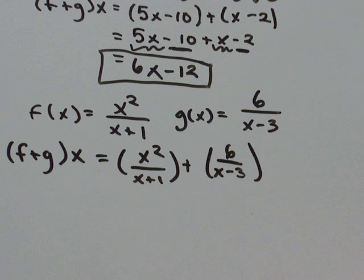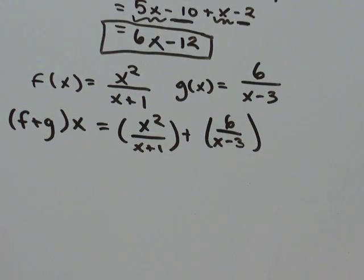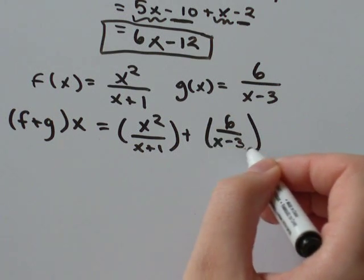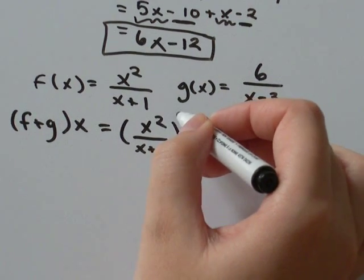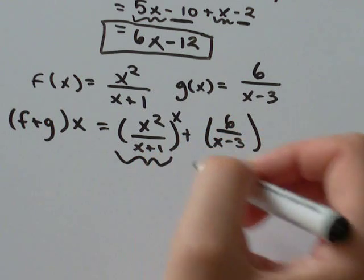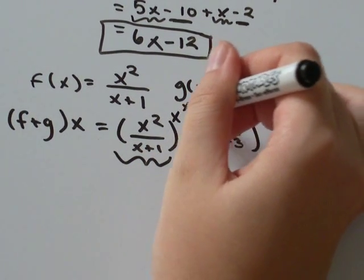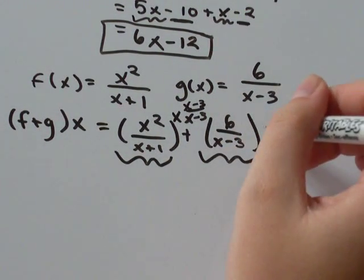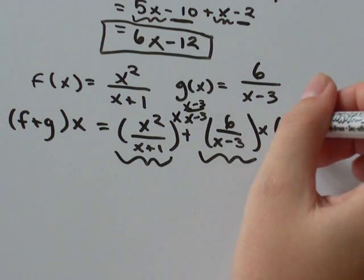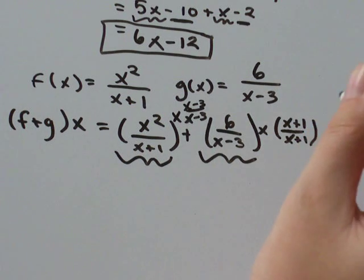Now we're at a problem. We need to add these two together. They're fractions. So I'm going to do a video on adding fractions if you're not very comfortable with it, but I'll just go through it quickly here. I'm going to look at the denominator on this one, the denominator on this one. They're not the same. So how do I make them the same? I'm going to multiply this by x minus 3 over x minus 3, and everything in here I'm going to multiply by x plus 1 over x plus 1.